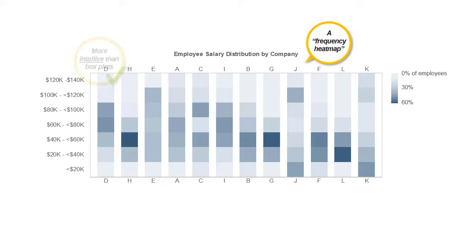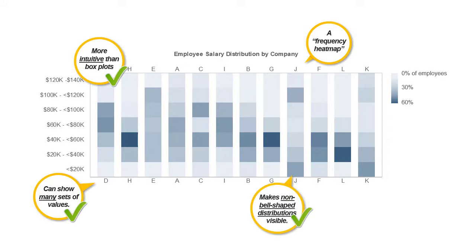Certainly in my experience, people tend to find these much easier to understand than box plots, unless they're familiar with box plots already. I can still show multiple sets of values as I can with a box plot. One of the other advantages that it has over box plots is that it makes non-bell-shaped distributions like company J here actually visible. I can see that there are actually very few employees around the median of this company's salary. There seem to be really two groups, a group of highly paid employees and a group of employees making less than 20K, which could be important in this case.